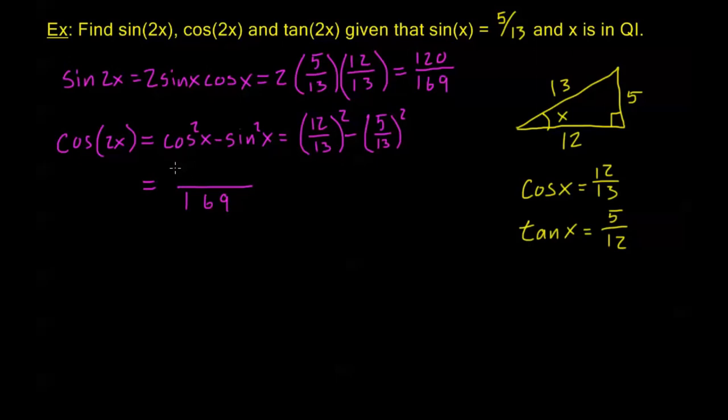I'm going to have a common denominator between these two fractions of 169. 12 squared is 144 minus 5 squared which is 25. So I get 119 over 169.